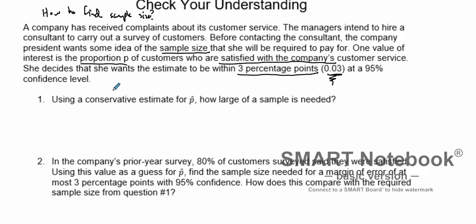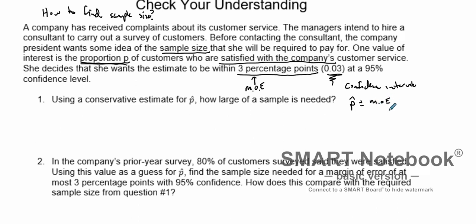At a 95% confidence level. So what is this three percentage points going to be? Well, that three percentage points is going to be your margin of error. Since we're talking about proportions and she wants to estimate within three percentage points, we're talking about a confidence interval. Knowing how to construct a confidence interval, we say whatever our p-hat is from our sample plus or minus our margin of error.